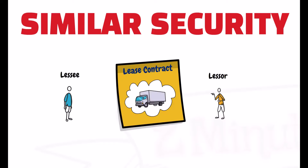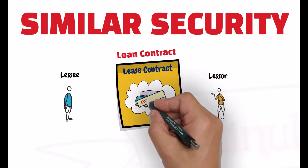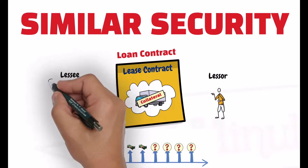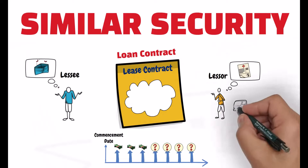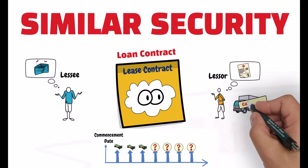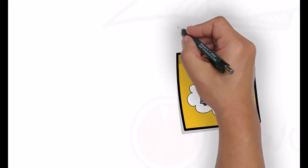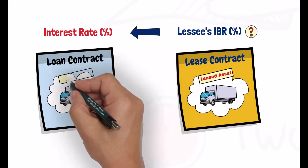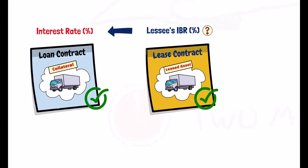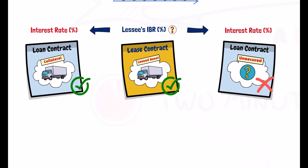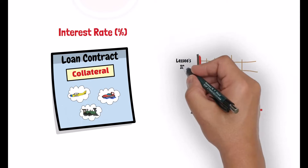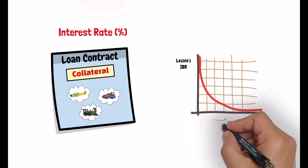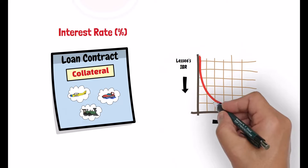With a similar security: the lease transaction should be viewed as if the lessee has borrowed funds from the lessor, and that borrowing is secured by the leased asset. On the event the lessee defaults on the lease payments, the lessor has the right to repossess the leased asset from the lessee. That leased asset can be viewed as the collateral for the lease transaction. When estimating the lessee's incremental borrowing rate, the interest rate used should be for a borrowing transaction secured by a collateral similar to the collateral in the lease transaction. You cannot use an interest rate for unsecured borrowing transactions. A high quality collateral would reduce the lessee's incremental borrowing rate.